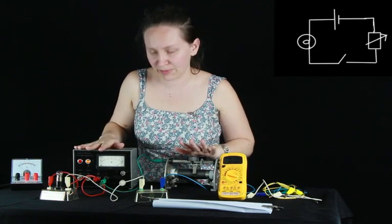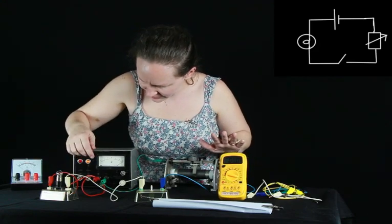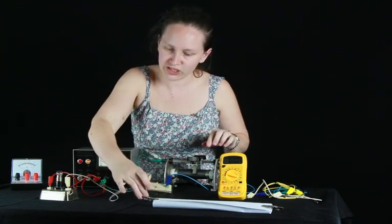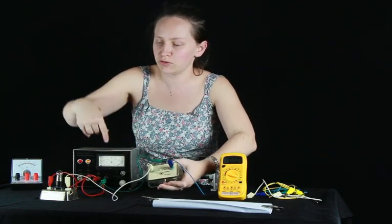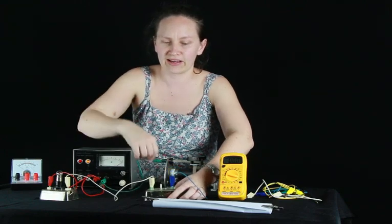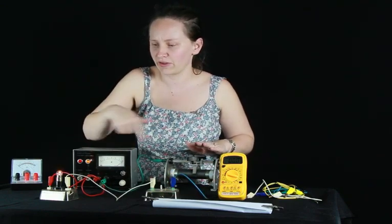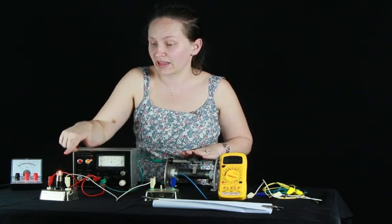Let's turn the power supply on now and see what happens. We'll just need to close the switch, which will complete the loop, allowing our current to flow. And you can see, once the current flows, the light globe lights up.